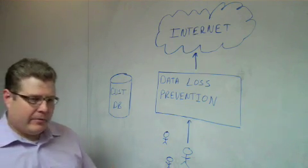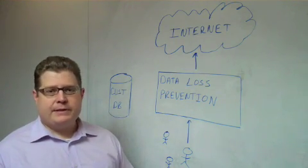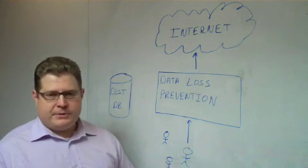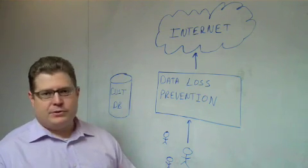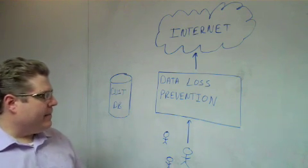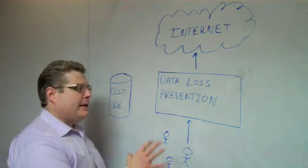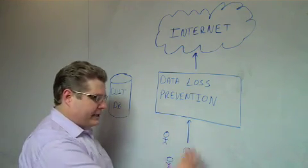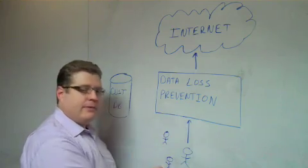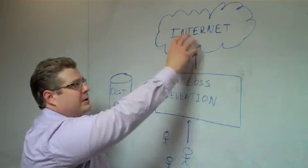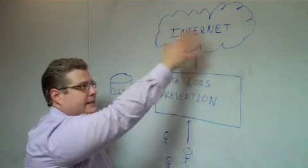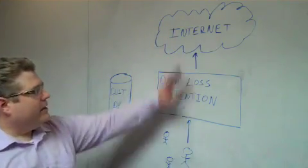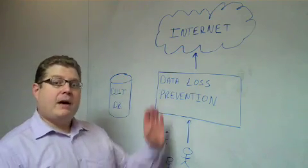So the first thing that you want to think about when you're thinking about a data loss prevention solution is what are your objectives for having a solution in place. And in this example, what I want to do is prevent confidential information from moving from the insider market as my organization, represented by these folks here, out to external entities. In this case, we'll just be looking at movement of confidential information out onto the internet.